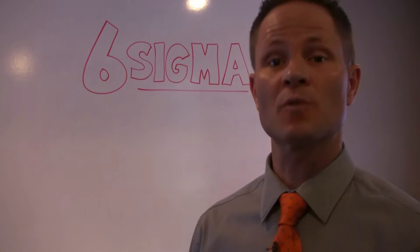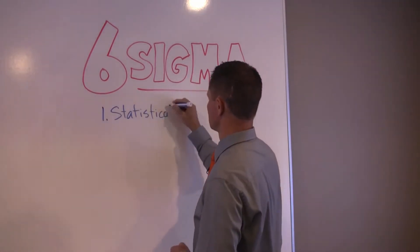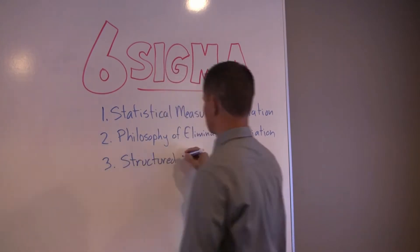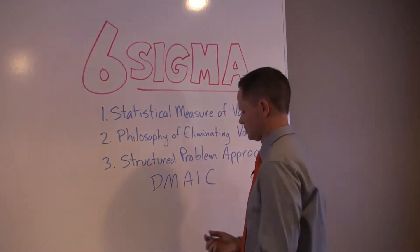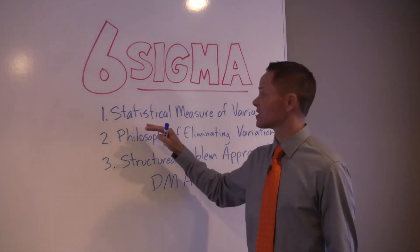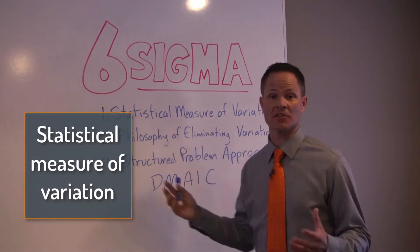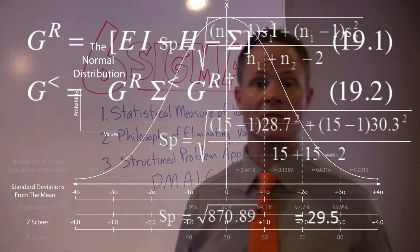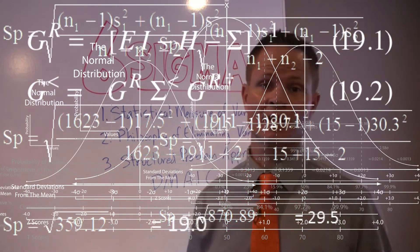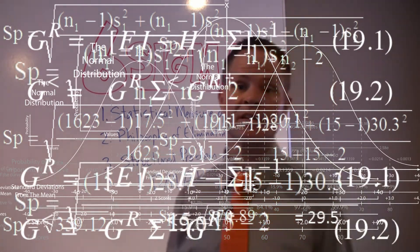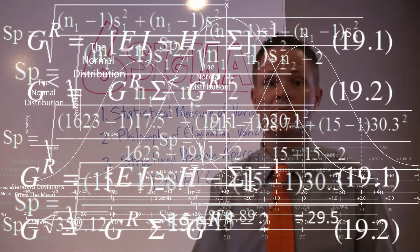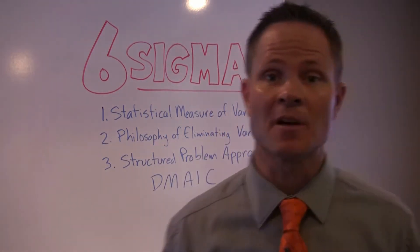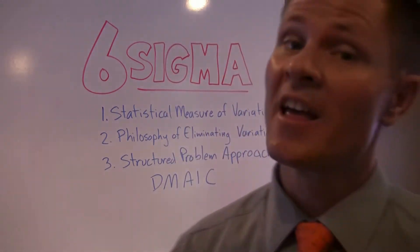Six Sigma is really three things. The first thing that Six Sigma is is a statistical measure. It simply means how much variation is there in your process, and it is actually the average amount of variation of any data point from the mean of your population. Now, if all of that sounds like mumbo-jumbo and you really don't understand statistics, that's okay.